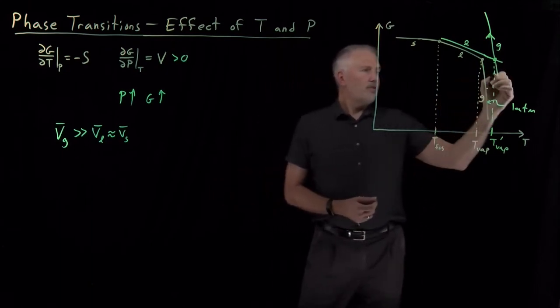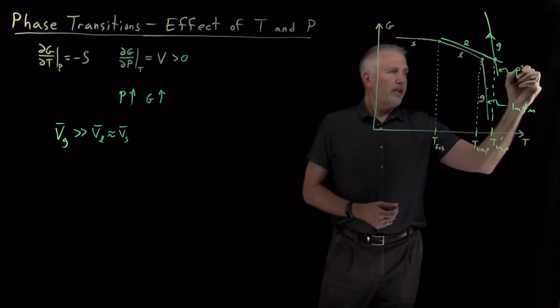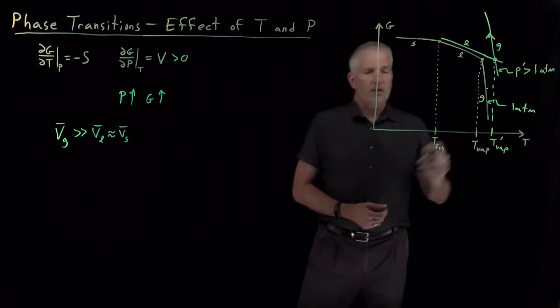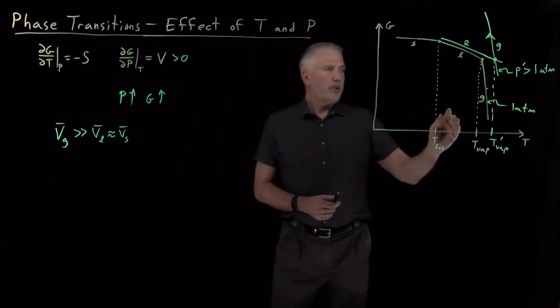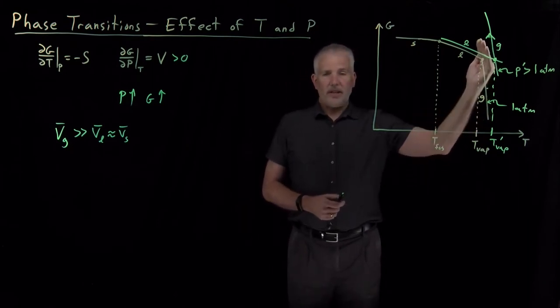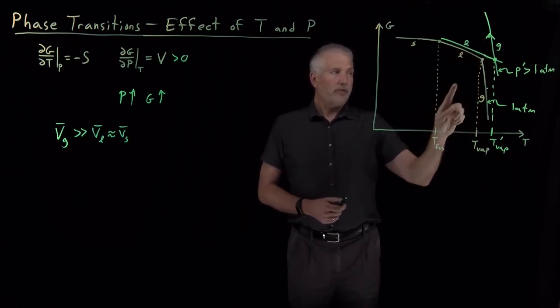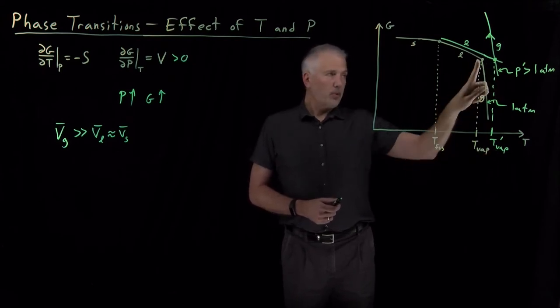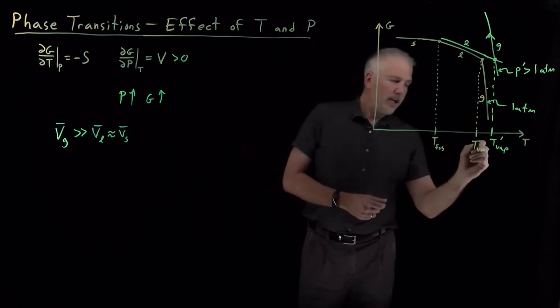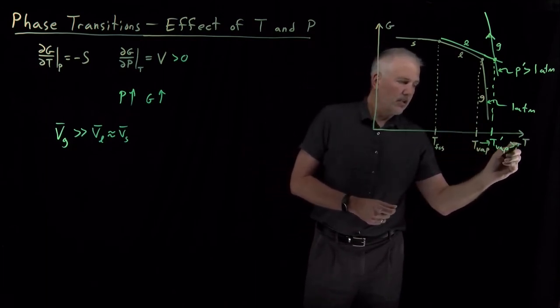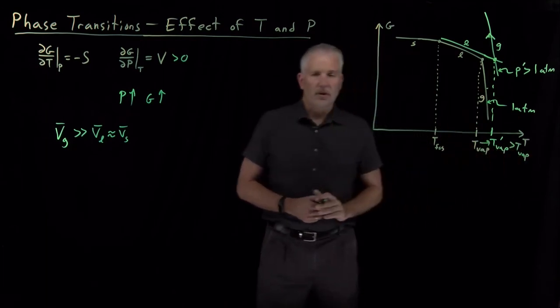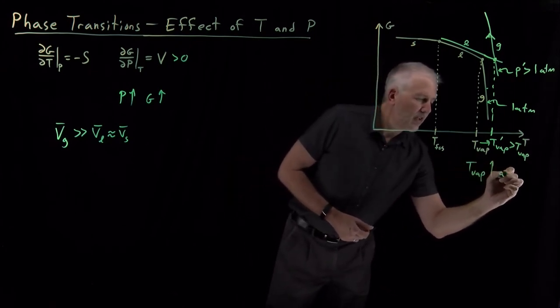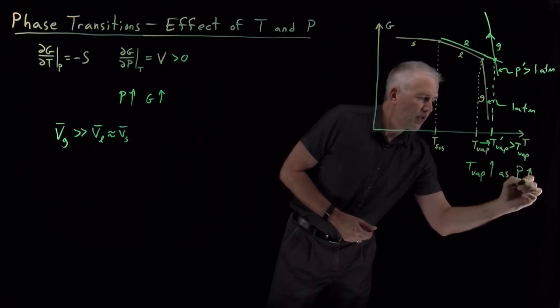These curves are at some increased pressure, bigger than the initial pressure. At that increased pressure, because the gas phase free energy increased by more than the liquid phase, the result of that is always that the temperature of vaporization, the boiling point, will be shifted to a higher value. So what we've just seen is the boiling point will increase as the pressure increases.